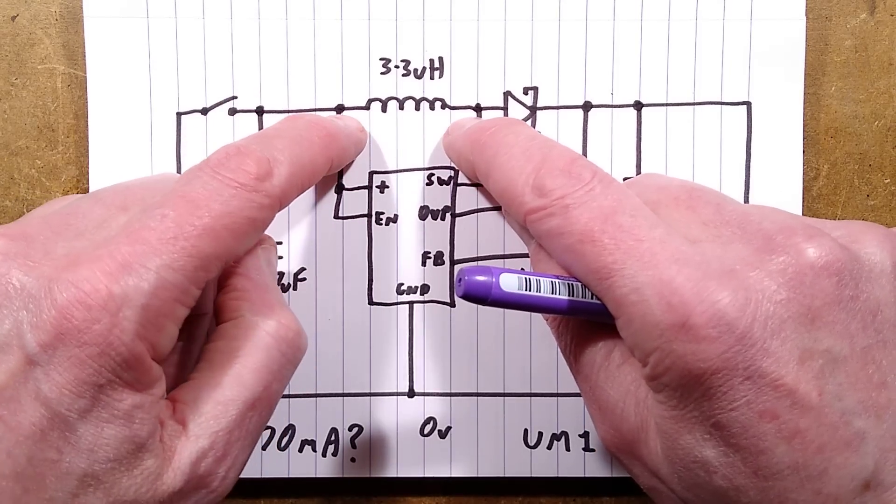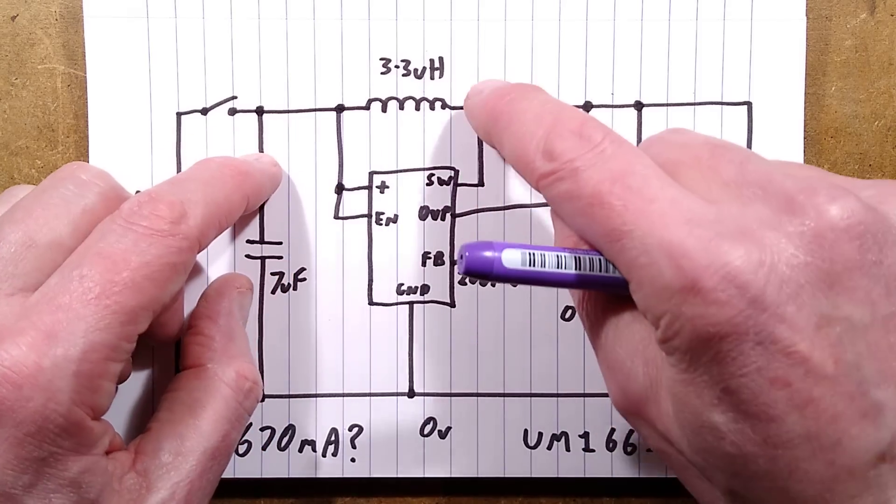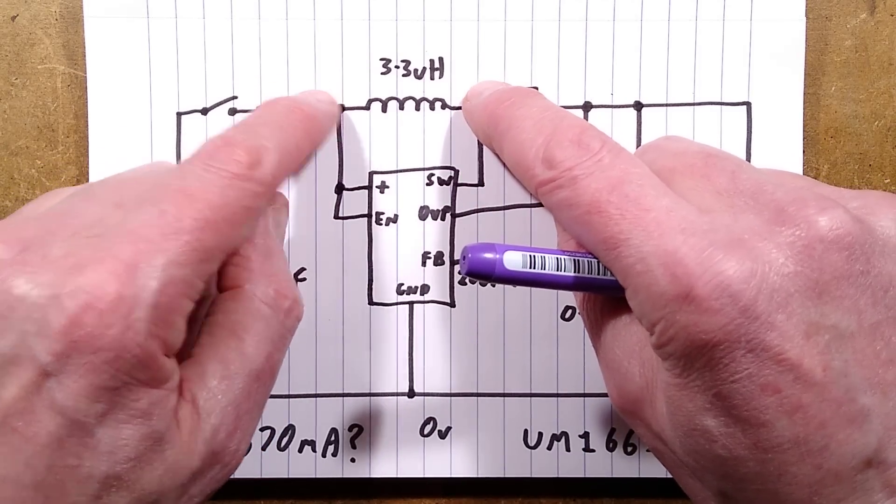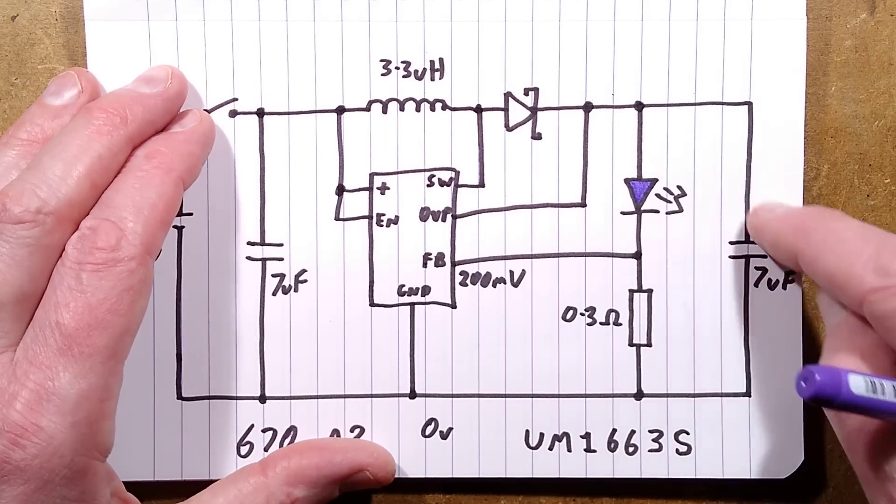Now this end goes positive with respect to this end, adds on to the battery voltage and gets pushed through the Schottky diode and charges up this capacitor.